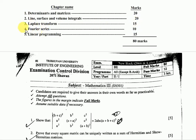Chapter 4 is Fourier Series. Chapter 5 is Linear Programming worth 15 marks for a total of 80 marks. This shows the maximum marks for each section.